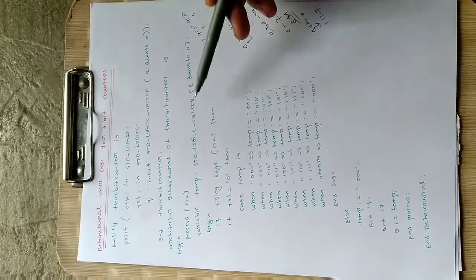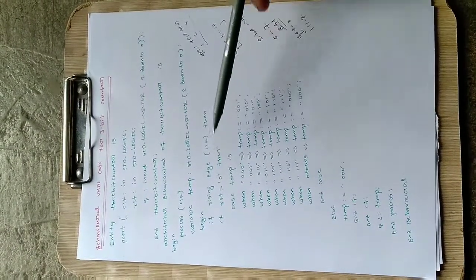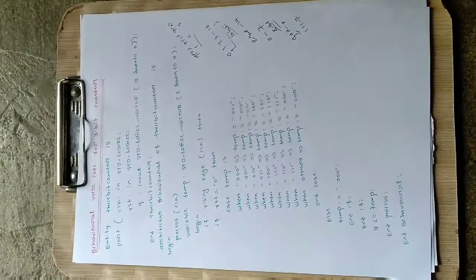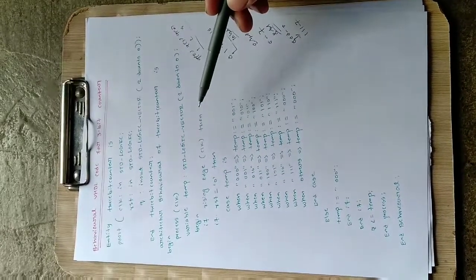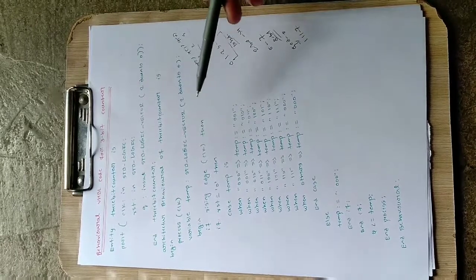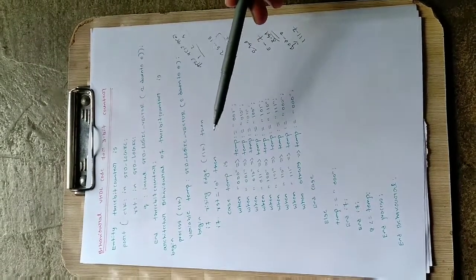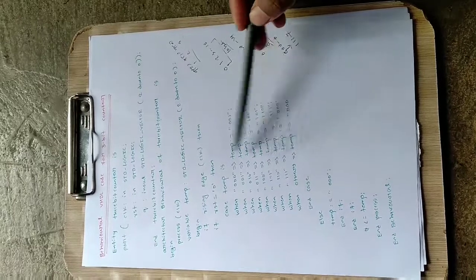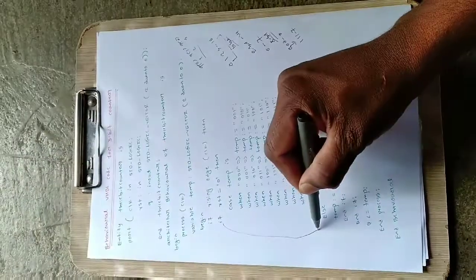Then 'begin' indicates the start of the process. We write: 'if rising_edge(clock) then' — in a counter, the clock is very important. When the clock is high, the counter is in the active state; otherwise it is inactive. It checks for the positive edge, so this is a positive-edge-triggered counter. Then: 'if reset = 1 then' the output will be reset to 0. If reset is not 1, it will proceed to the case statement.